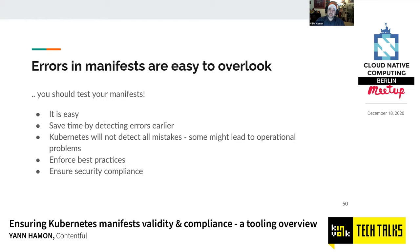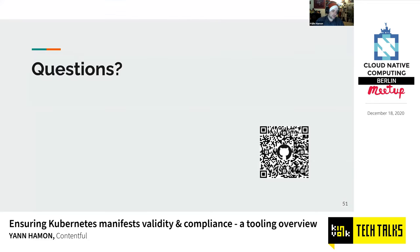Errors in manifests are easy to overlook — you should definitely test them, it's easy to set up and saves time. Kubernetes will not detect all mistakes: I've regularly seen properties that don't exist get accepted and silently ignored, not doing what you thought. Testing your manifests will help enforce best practices and ensure compliance with security guidelines. There's a GitHub repository with all the scripts and documentation from this talk.